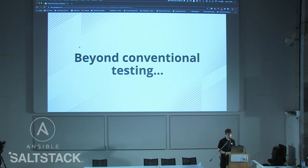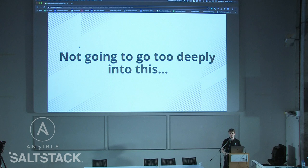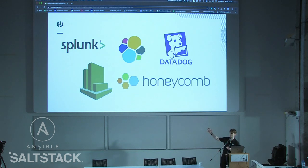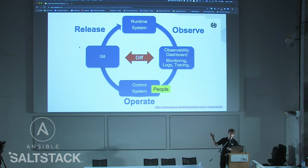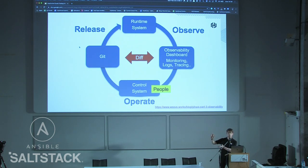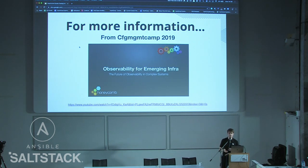There are two extra steps beyond conventional testing. The first is observability — I won't go too deep on this. As operators of this software, we want to test it beyond the test suite and see if it's actually working as the end user uses it. There's only so much you can do with testing. A good diagram from Weaveworks shows that after you deploy something, you observe it and use that observation to feed back — maybe something you've written is quite slow, you detect more 500 errors in your ELK stack, and you figure it out from there. There's a great talk from Charity Majors, who founded Honeycomb.io — she was here last year and did a talk on observability.